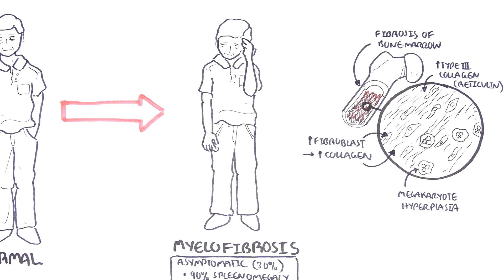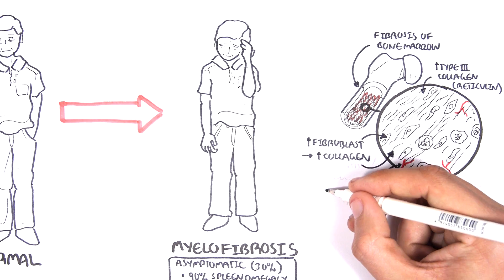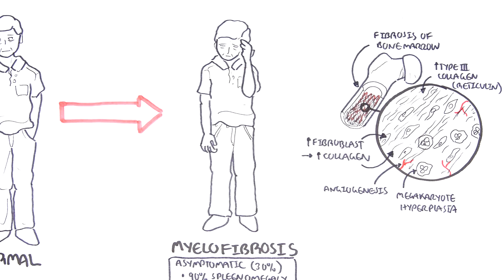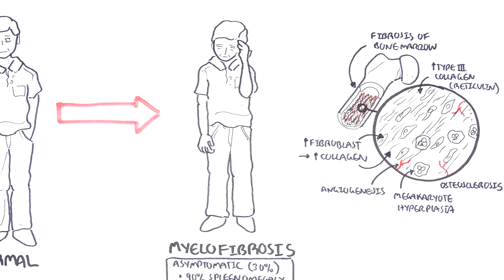Remember that megakaryocytes are the cells that produce and eventually release platelets. There is also proliferation of blood vessels, angiogenesis, and also osteosclerosis, which is because of the increase in activity of osteoblasts, the bone building cells in the area. What is not shown here is also the proliferation of neutrophils that also contribute to the fibrotic transformation of bone marrow.